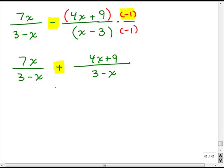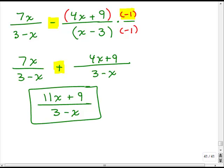All right. So, now that I have a common denominator, I can add the numerators. So, that gives me 11x plus 9 over 3 minus x. Okay.